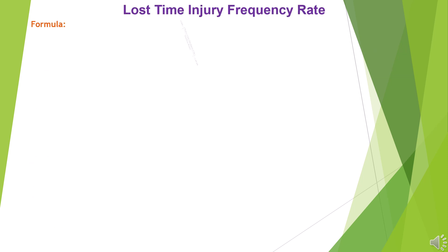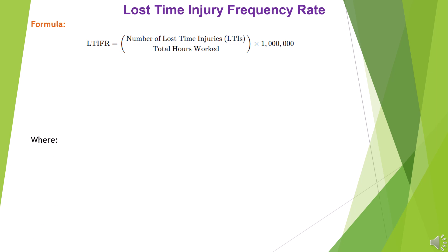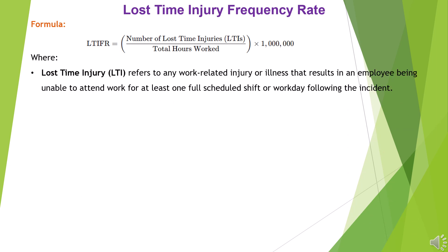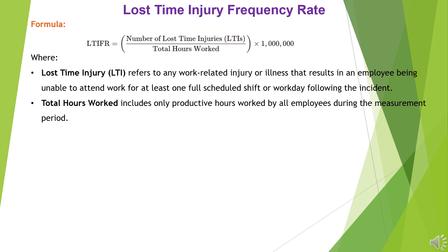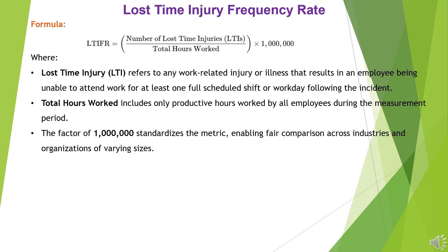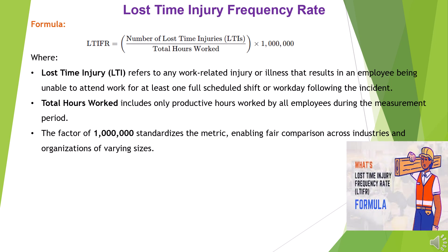Formula: LTEFR equals the number of Lost Time Injuries (LTI) divided by total hours worked, multiplied by 1 million. Where Lost Time Injury (LTI) refers to any work-related injury or illness that results in an employee being unable to attend work for at least one full scheduled shift or workday following the incident. Total hours worked includes only productive hours worked by all employees during the measurement period. The factor of 1 million standardizes the metric, enabling fair comparison across industries and organizations of varying sizes.